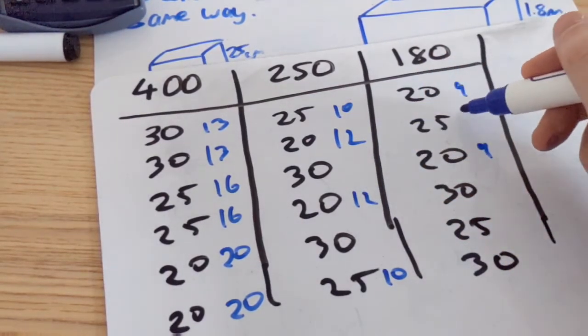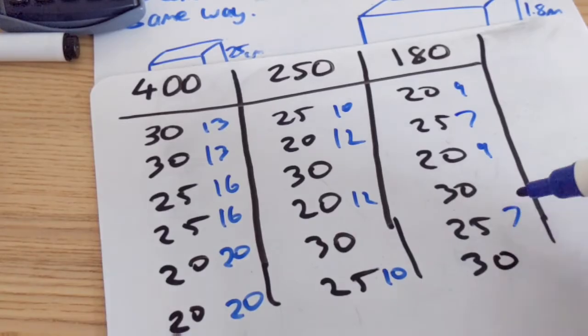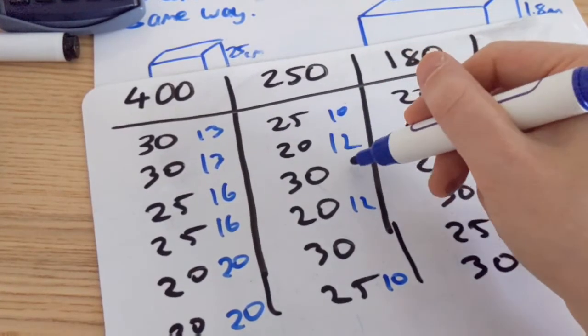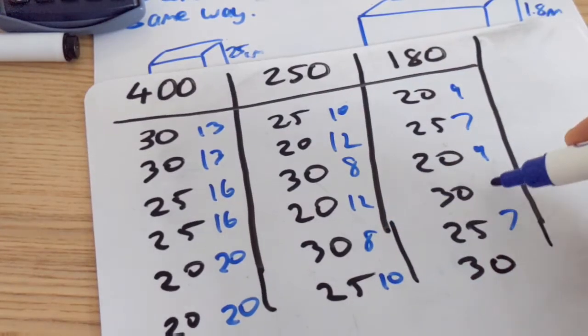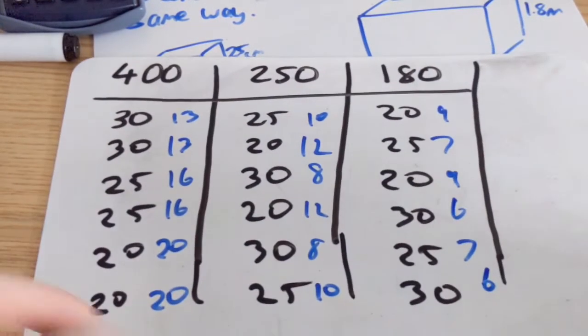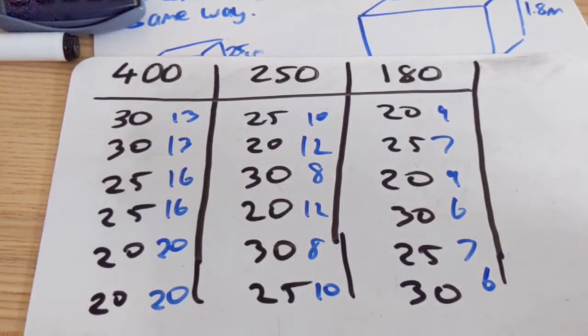Then 25, that goes in 7 times and that's also 7. 30 goes in 25 eight times, so that one's also going to be 8. And then again, that'll be 6 and that'll be 6. A lot of these you can do without a calculator, but I always recommend if you have a calculator to use it.